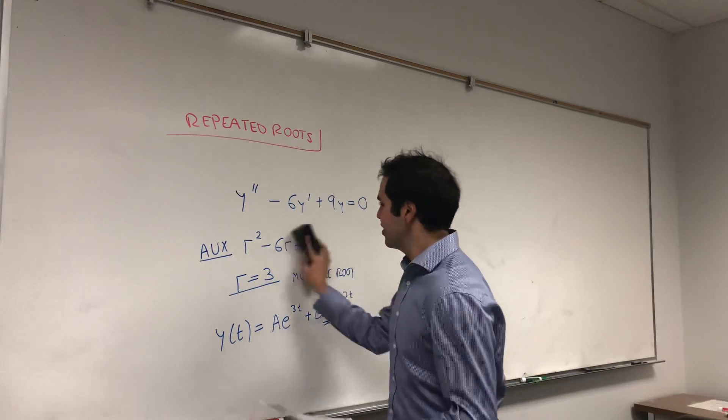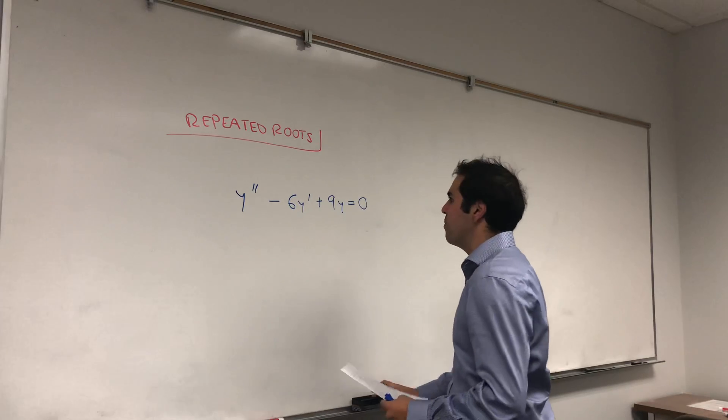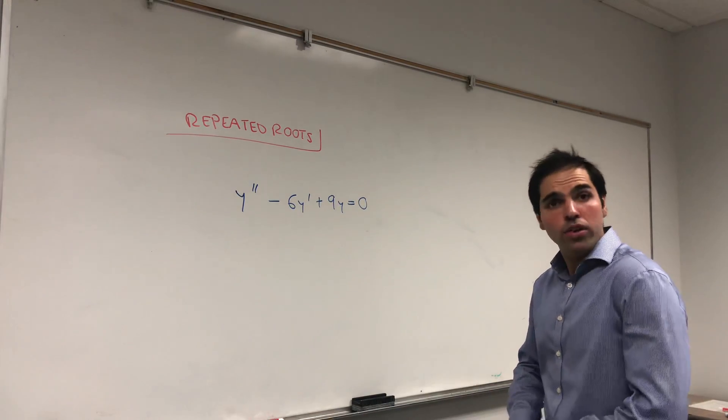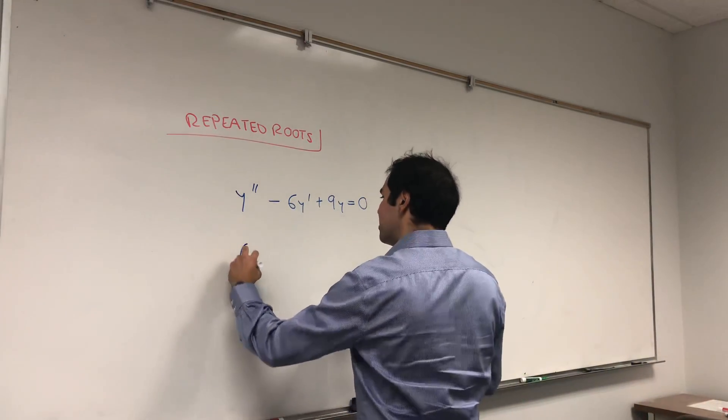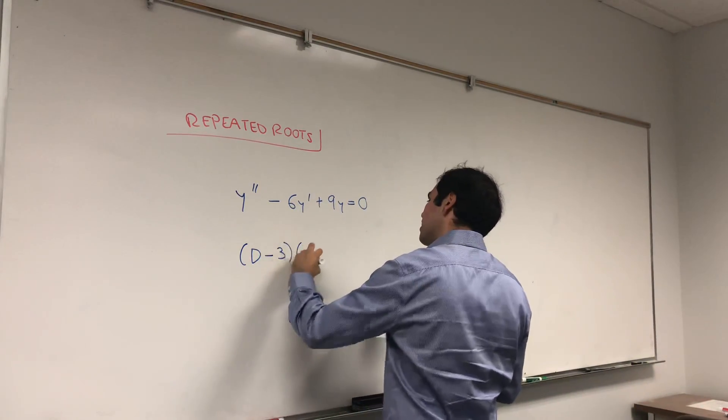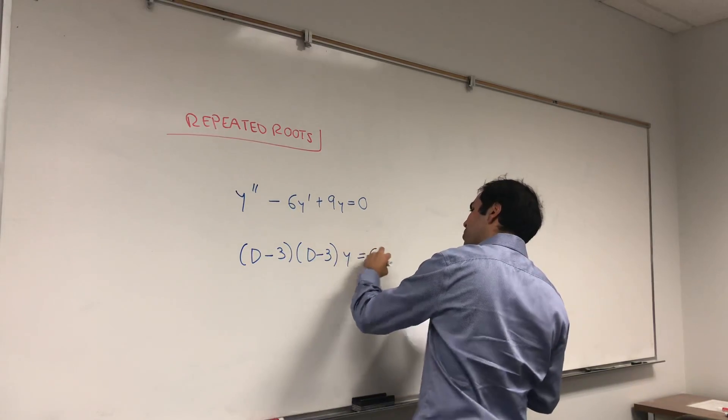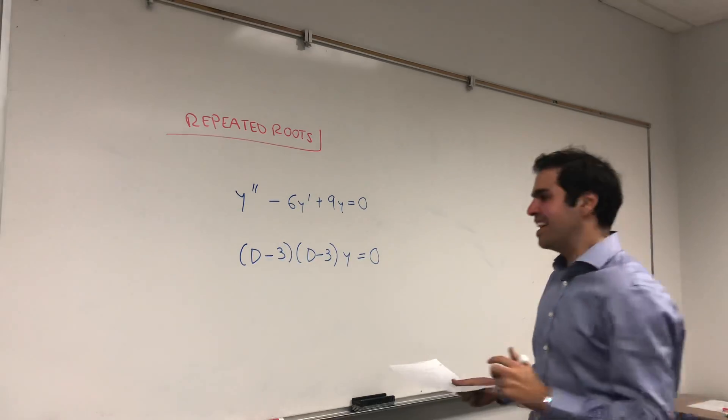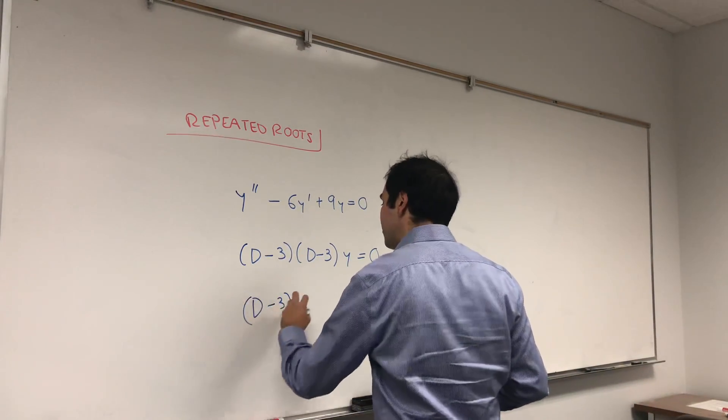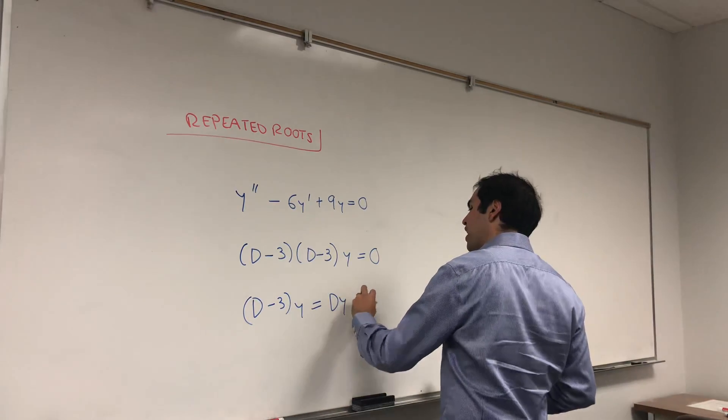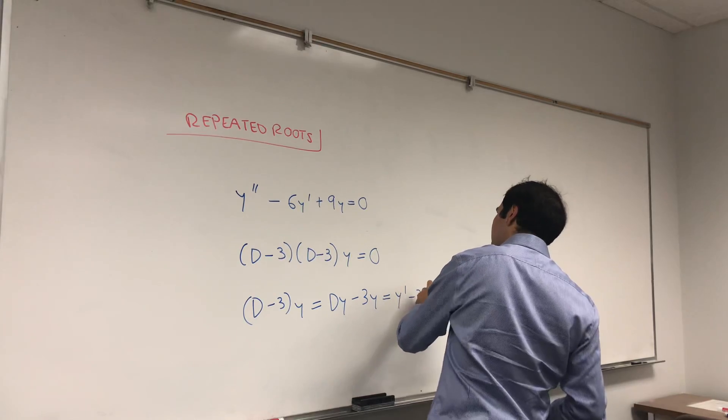So, take this equation. y double prime minus 6y prime plus 9y equals zero. It turns out you can factor this out quite nicely. This is really the same as d minus 3 times d minus 3 of y equals zero. What does that notation mean? d means differentiate. So, d minus 3y, that's dy minus 3y, and that's y prime minus 3y.